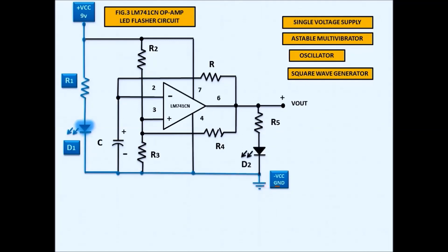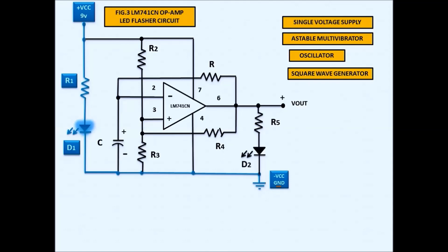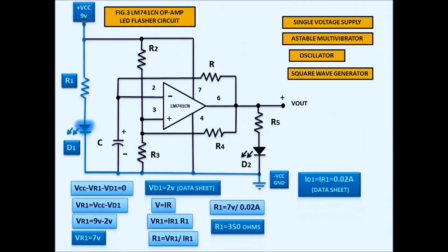When we apply a voltage supply to the circuit, current flows from VCC through R1 and D1 to ground. We need this power LED to indicate that the circuit is on. We need to calculate the value of R1 to limit the current that flows into the LED.